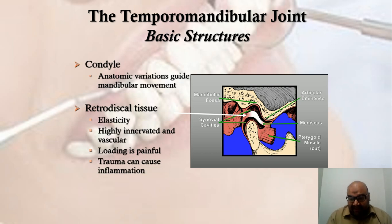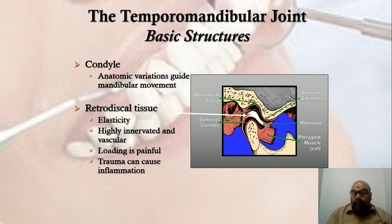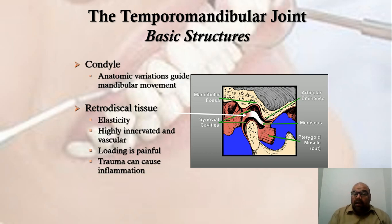Because the articular disc has no blood vessels and no nerves, normal mandibular movements — talking, pronunciation, enunciation, mastication, and chewing — are all painless. However, the posterior part of the articular disc is confluent with the retrodiscal tissues, which have blood vessels and are highly innervated. If the condylar process articulates posteriorly into the retrodiscal tissues instead of the disc, loading or mastication becomes painful.